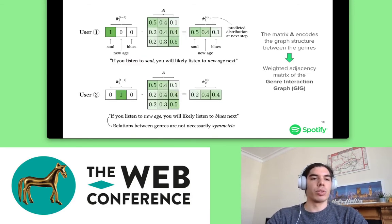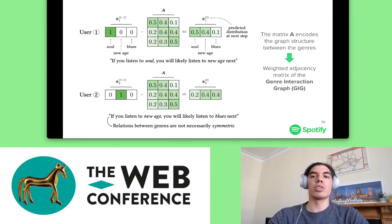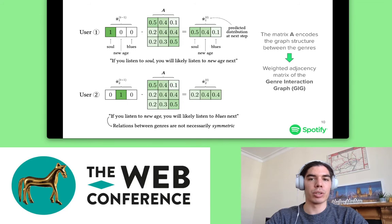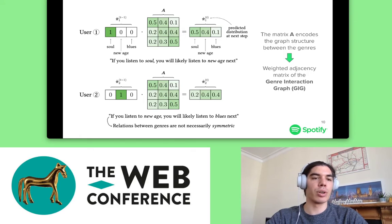How can we model the evolution of user preferences? We use a simple model with a first-order Markov structure. Here, pi is the distribution of how the user has allocated listening budget across genres, and we multiply this distribution by a transition matrix A between genres, which gives a predicted distribution of how the listening budget would be allocated in the next time period. This is a directional model, not necessarily symmetric. As a simple example: user 1 only listened to Saw, so multiplying the probability vector by matrix A gives 50% to Saw, 40% to New Age, and 10% to Blues.